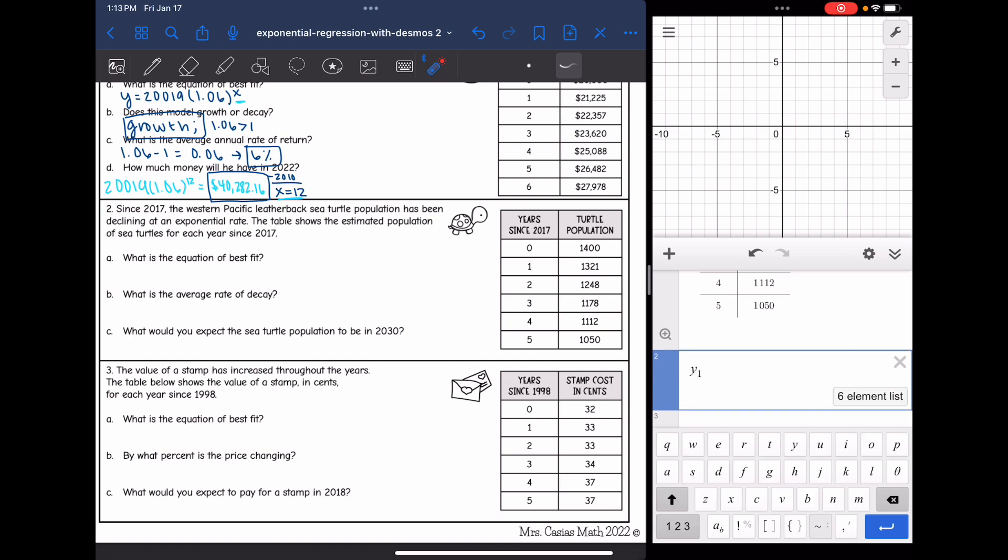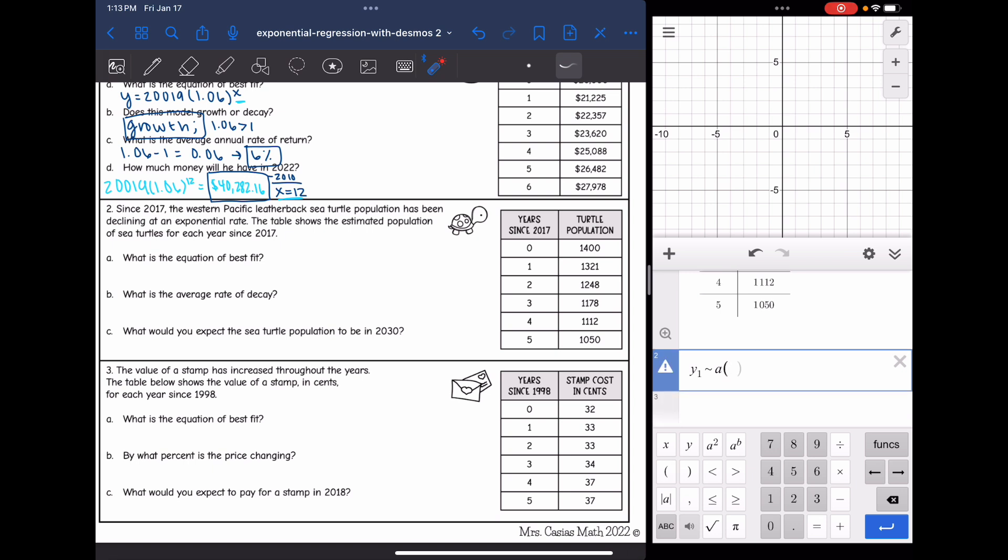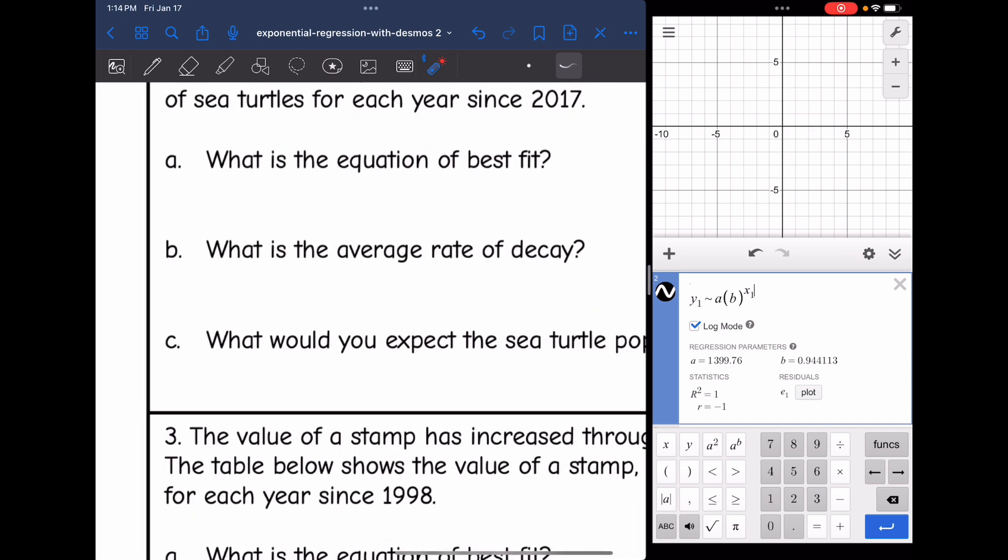Y1 is about A parentheses B to the X1. And then I'm going to make sure I check log mode. And my A value is 1399.76. And my B value is 0.94. So my equation of best fit is Y equals 1399.76 times 0.94 to the X.